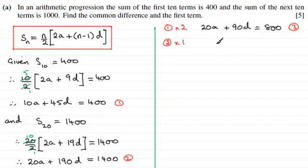I'm going to stick with equation 2. We've got 20A there, so I'm just going to put equation 2 there. If you like, I'm just multiplying it by 1, it just remains the same. So it's 20A plus 190D equals 1400. And because I haven't changed that, I'm just going to call it equation 2 still.